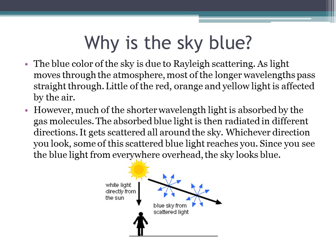Why is the sky blue? The blue color of the sky is due to Rayleigh scattering. As light moves through the atmosphere, most of the longer wavelengths pass straight through. Little of the red, orange, and yellow light is affected by the air.